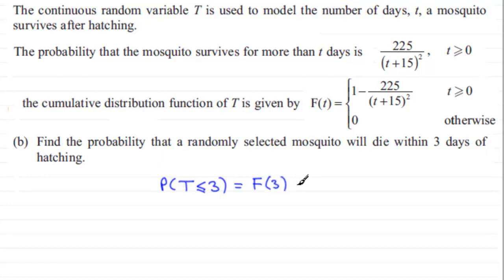All I need to do now is just substitute three into our equation up here. So that's going to be one minus 225 all over 3 plus 15, and that's all squared. Work that out and what you should find you get is eleven over thirty-six.